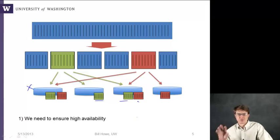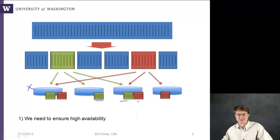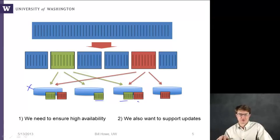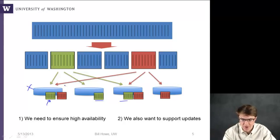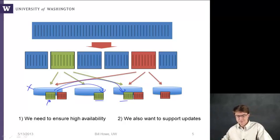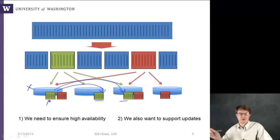The two requirements we need to speak to here are: we need to ensure high availability so that when something goes wrong the data is still available, and we also want to support updates in this context, which is different than before. Instead of just read performance or fault tolerance for reads, we also want to make changes to this data and have them propagate to both other replicas and in some cases to other consumers of that change — there might be other blocks of data that refer to the same information.